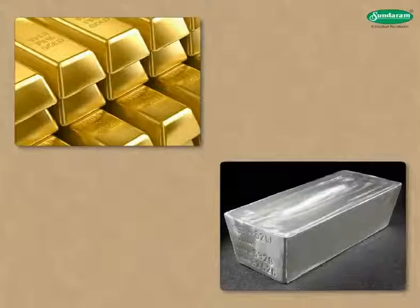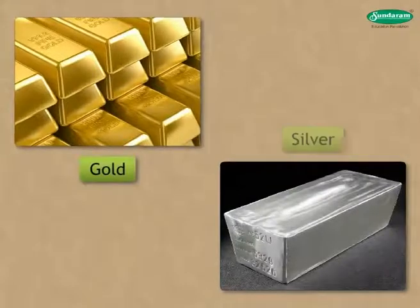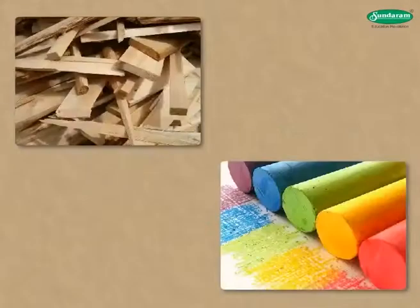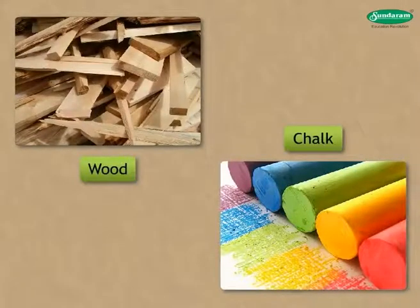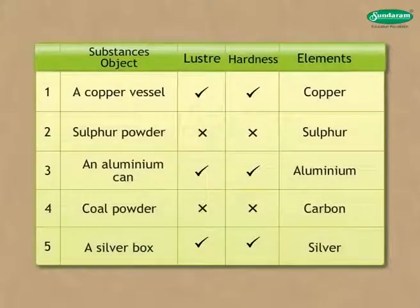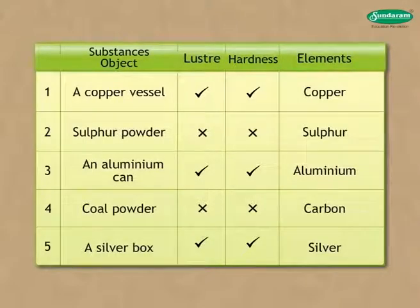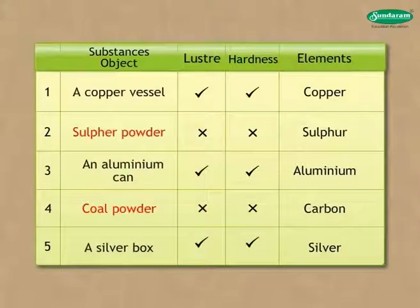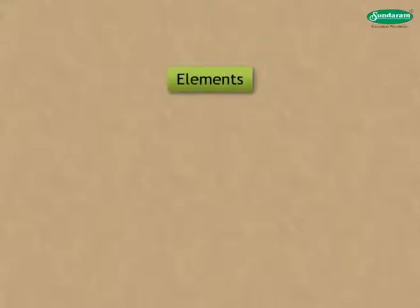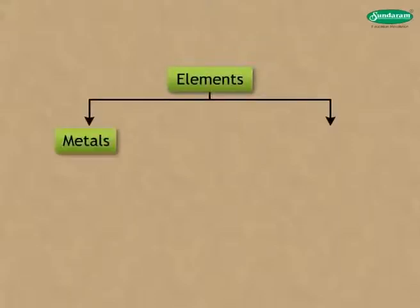Some solids are shiny and hard, for example gold, silver, etc. Whereas some are soft and brittle, for example wood, chalk, etc. A quick glance at the following table will help us understand this chapter — metals and non-metals — in a better way. You can see from the table that substances like copper, aluminium, silver, etc. have a shiny surface and are hard, whereas coal and sulfur do not shine and can be powdered easily. Elements can be divided into two kinds: metals and non-metals.